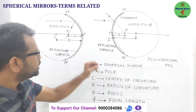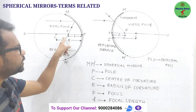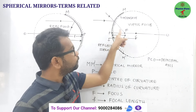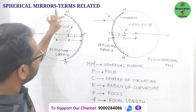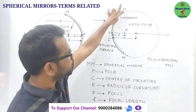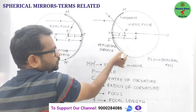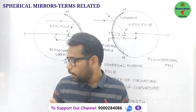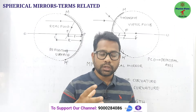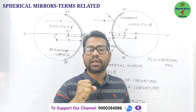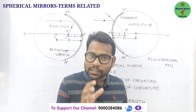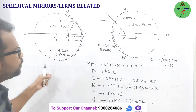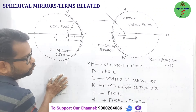For a convex mirror, light rays coming parallel to the principal axis get diverged after reflection, but they appear to come from one point on the principal axis — that is also called the focus. For a concave mirror, it is a real focus because light rays actually meet. For a convex mirror, it is a virtual focus. The distance between the pole of the spherical mirror and the focus is called the focal length. The effective reflecting surface of the spherical mirror is called the aperture.